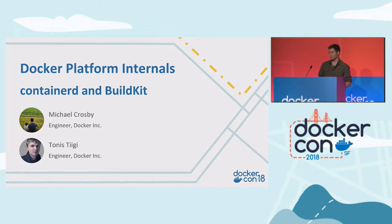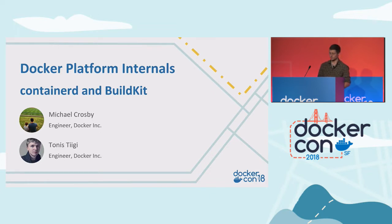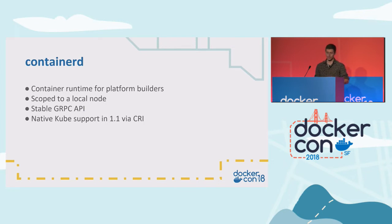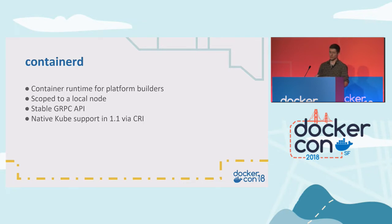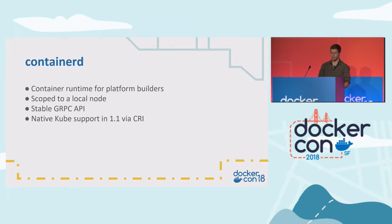Thanks everyone for coming. This will be a two-part talk. I'll start out talking about Containerd, we'll go in depth on the client aspect of it, and then Tonis will take over and talk about BuildKit. If you're not familiar with Containerd, it's basically a container runtime for platform builders. It's not geared towards end users like Docker is — it's geared towards providing a service to Docker developers, people building Docker or Kubernetes and other container platforms. Containerd is scoped to the local node. It runs only over a Unix socket, and it has a gRPC API over that socket.